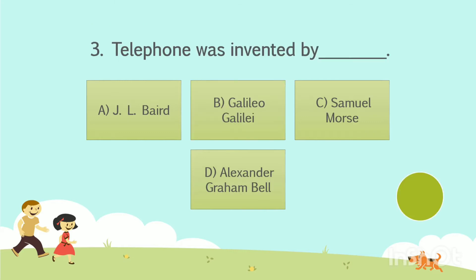Question number 3. Telephone was invented by — Option A: J. L. Byrd. Option B: Galileo Galilei. Option C: Samuel Morse. Option D: Alexander Graham Bell. Your time starts now. The answer is Option D, Alexander Graham Bell.